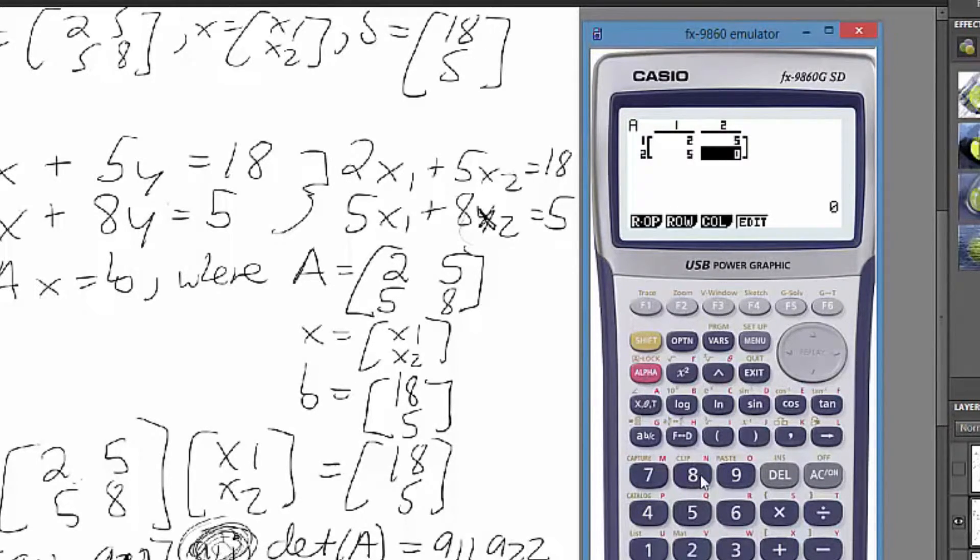You can go through these kinds of problems really fast instead of doing substitution, which will take maybe five to ten minutes, and you're really prone to arithmetic mistakes. This is really easy and systematic.